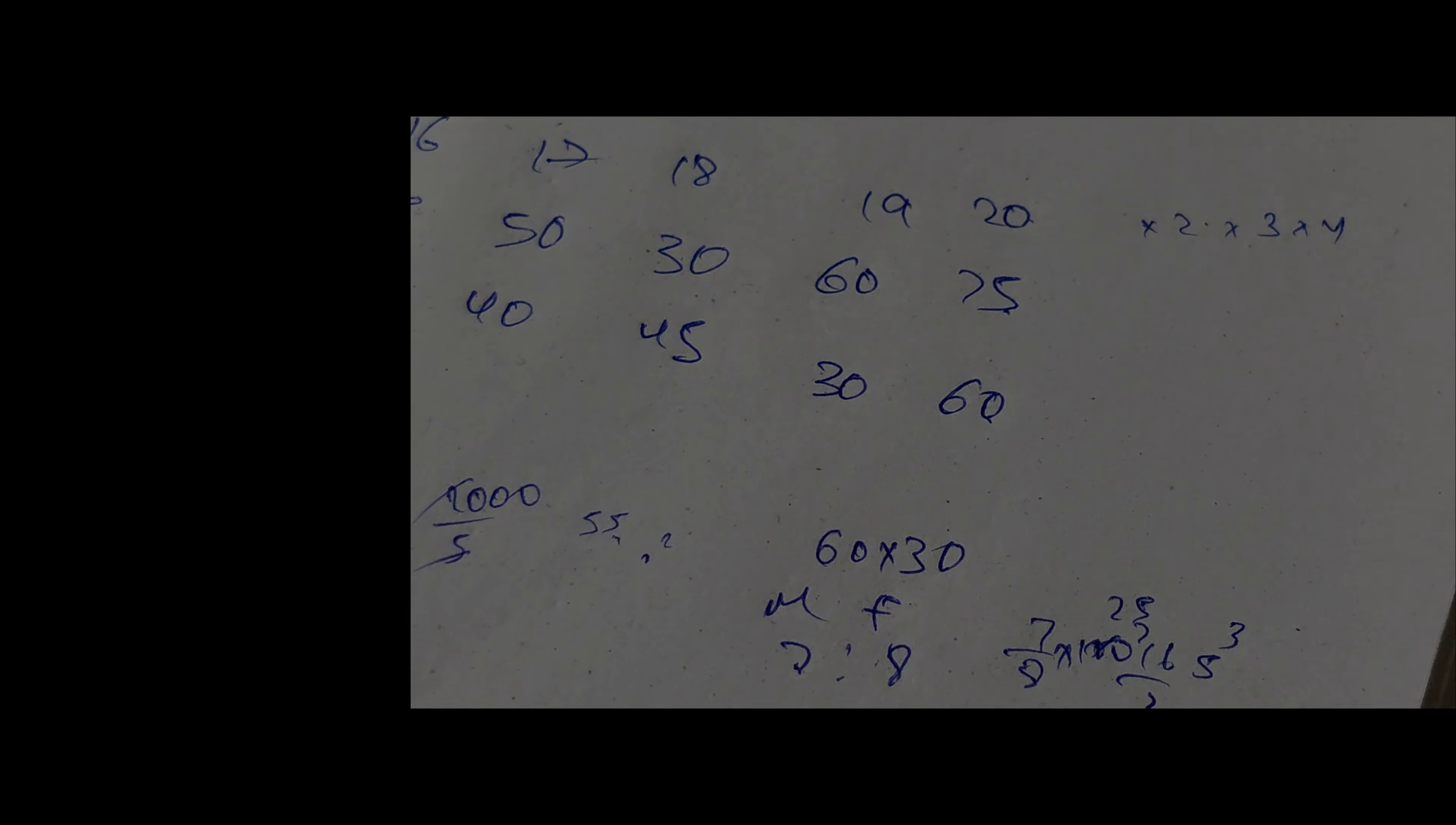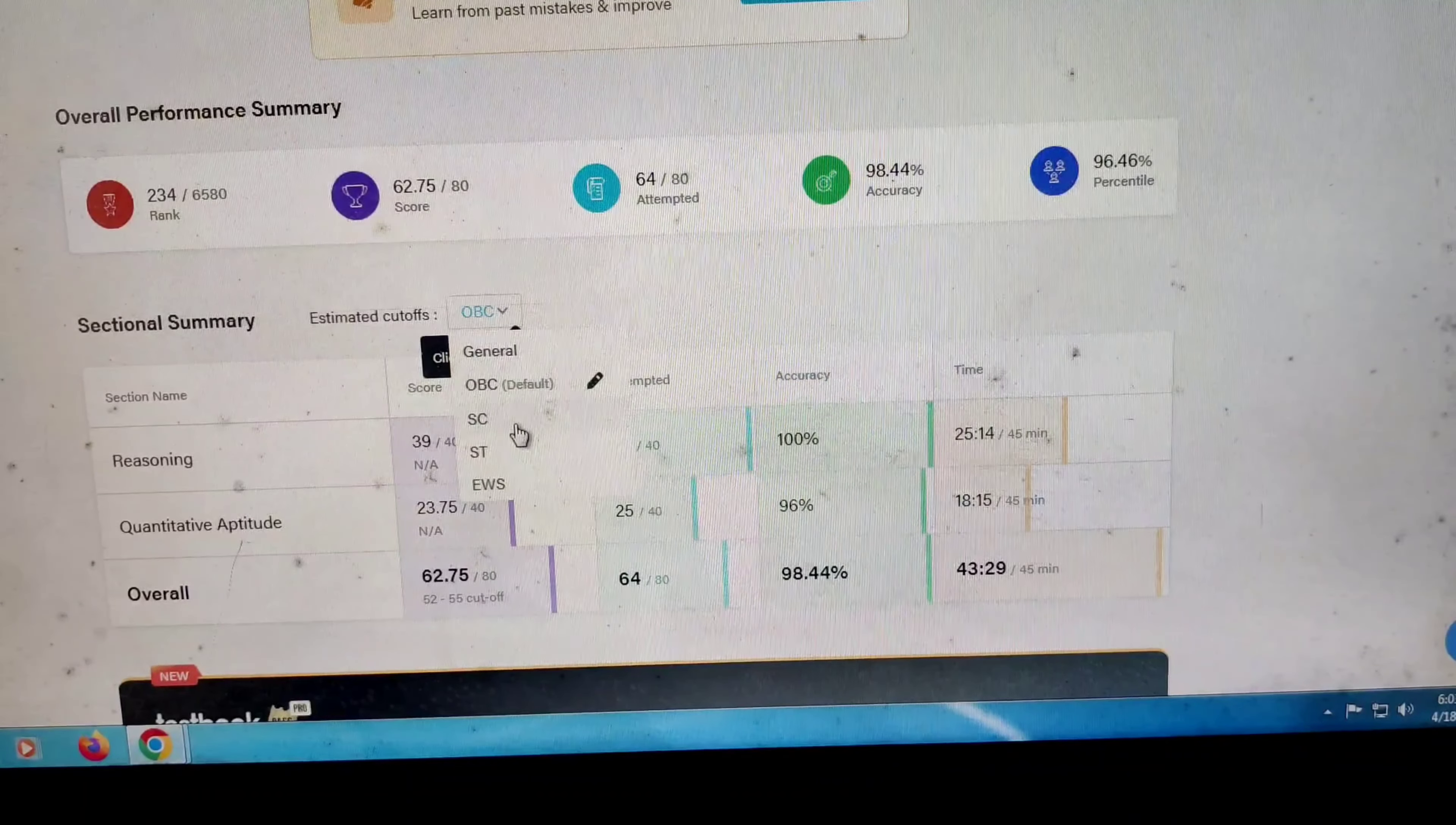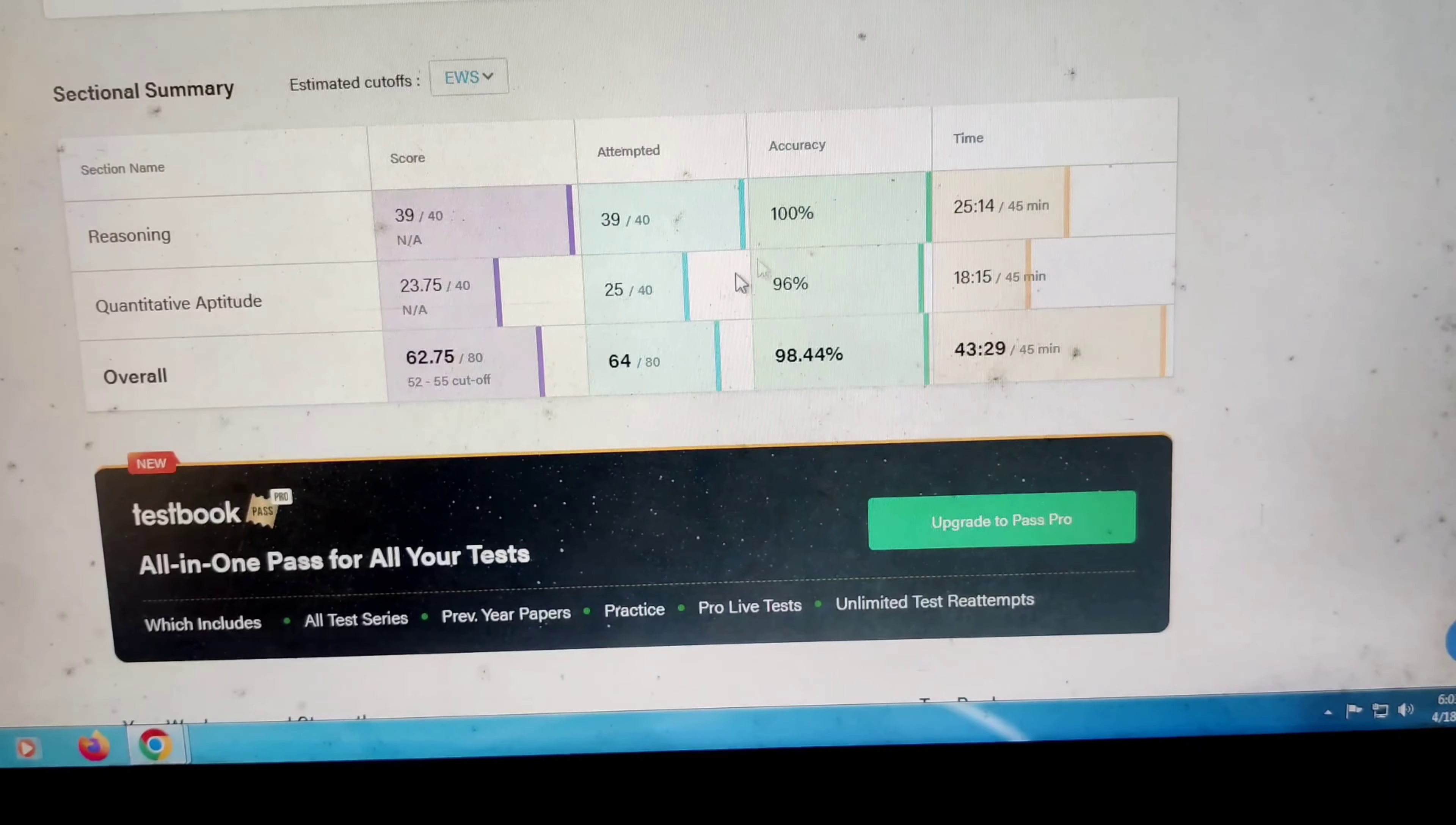Okay, next step into 2 into 3 into 4, so time is over. So this is my score and rank overall. My rank is 234 and score 62.75. I attempted 64 questions and accuracy 98.44%, and percentile 96.46.